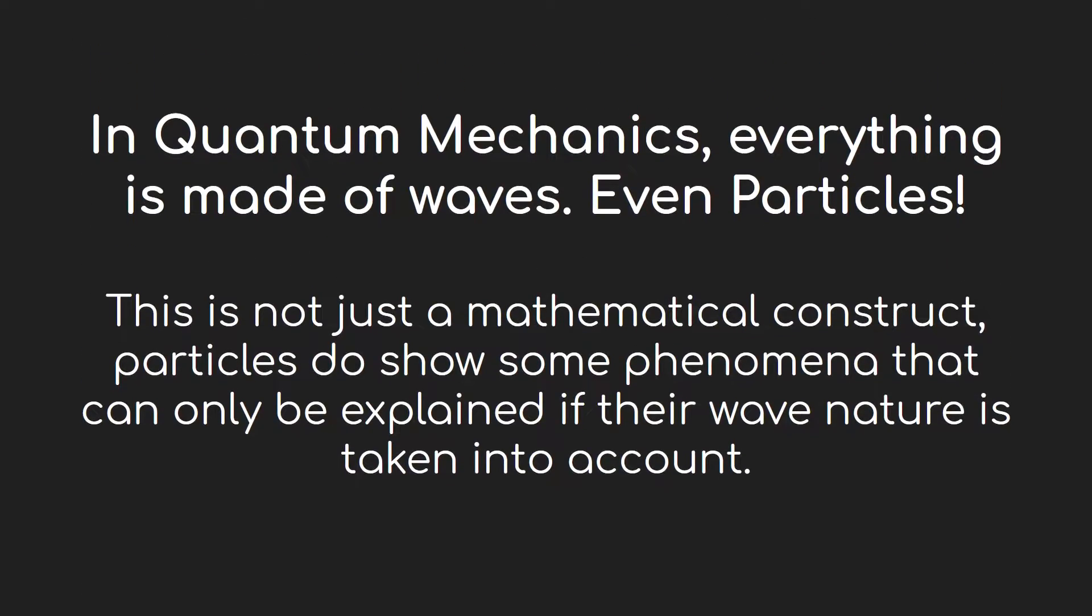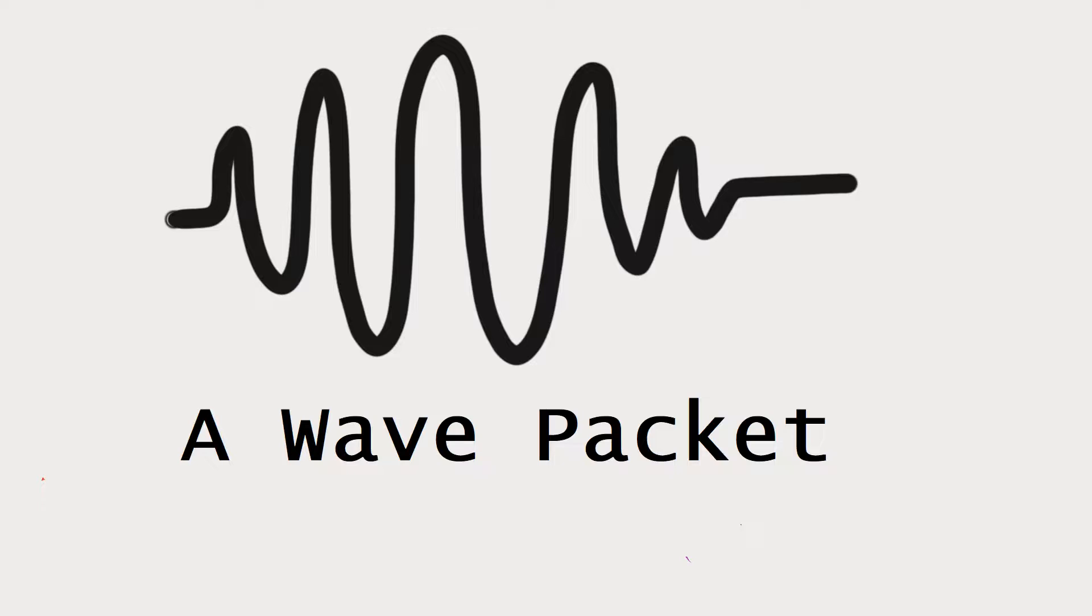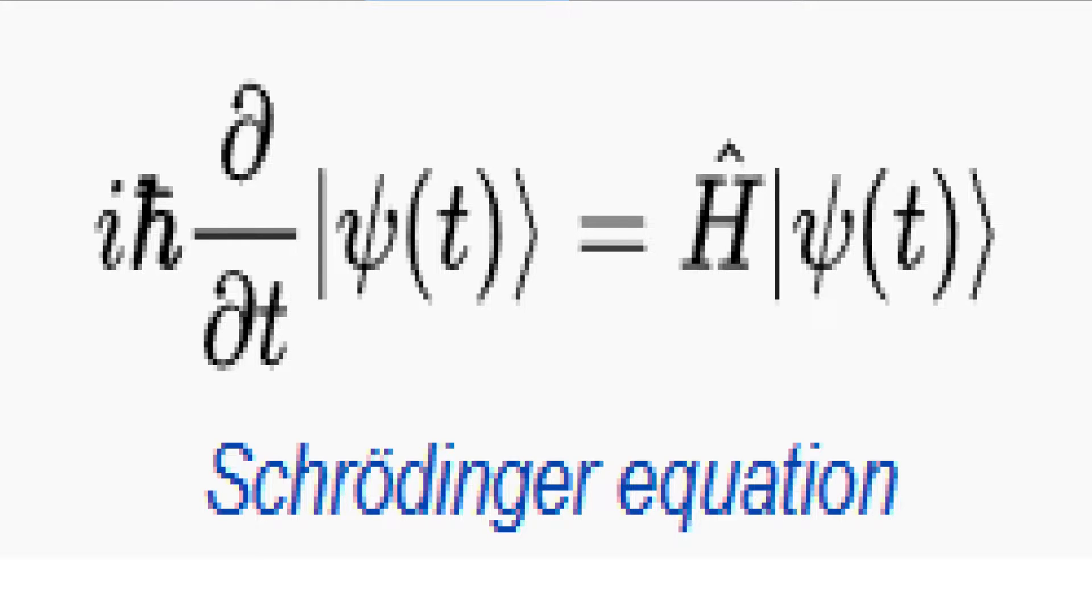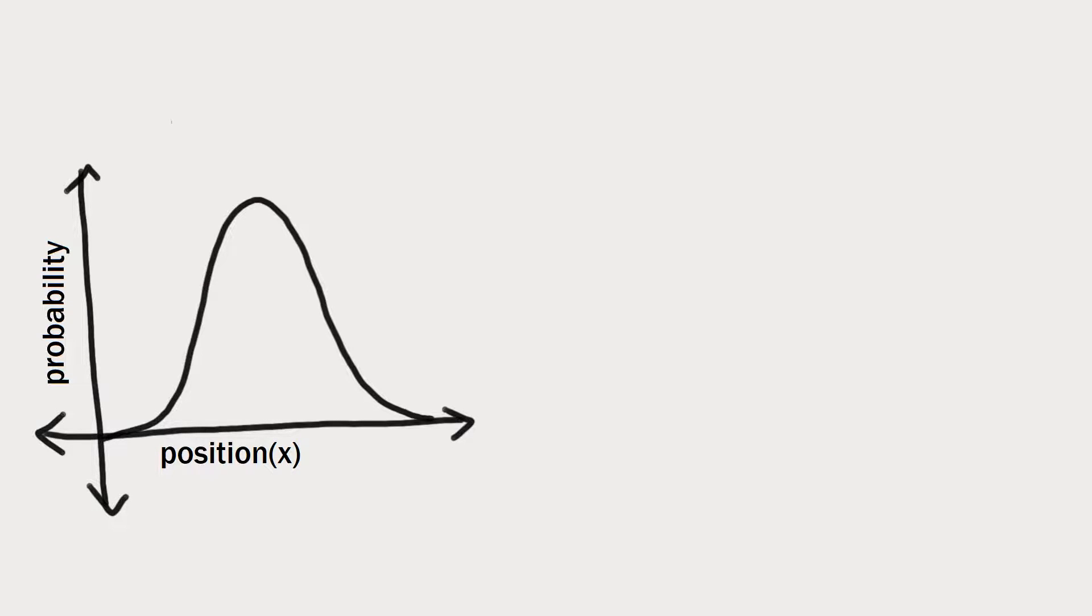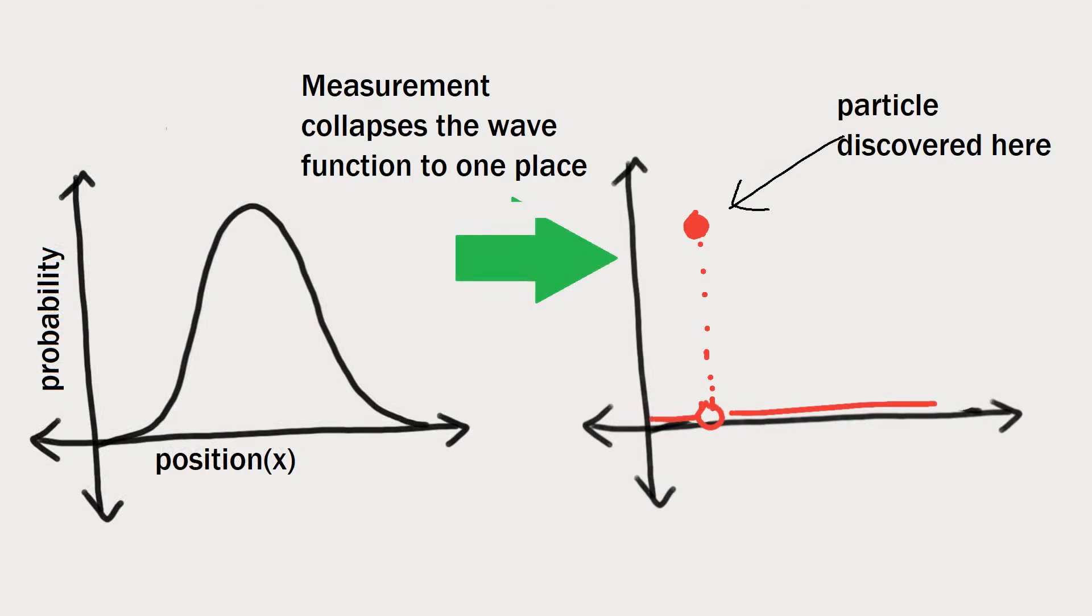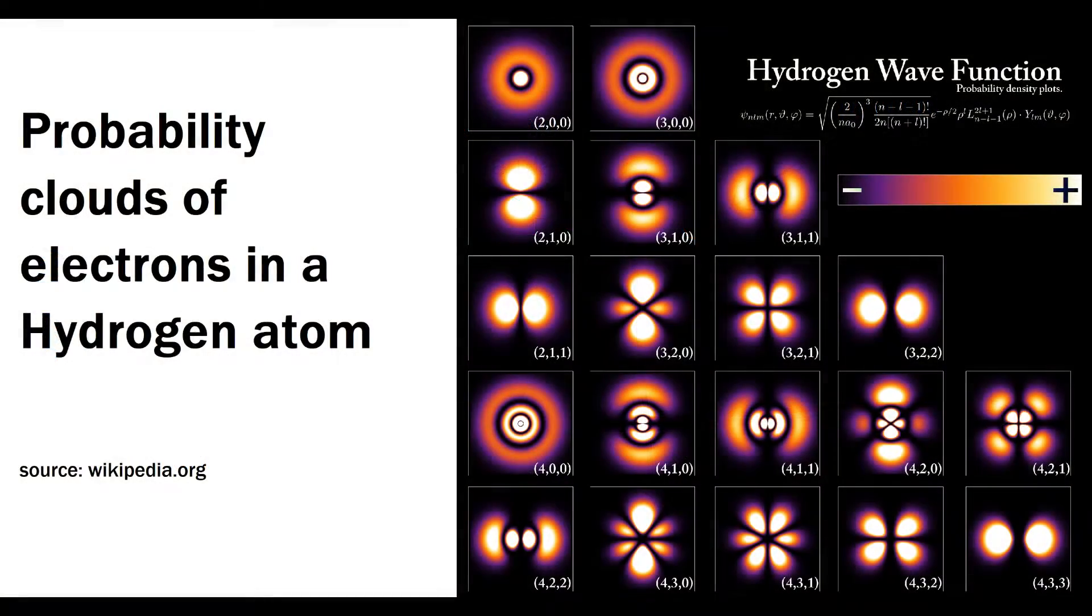In quantum mechanics, everything is described using equations of waves or wave packets obtained by solving Schrödinger's wave equation. Mathematical operations are performed on these waves to obtain information about the physical system. The waves themselves represent the probability or the probability density to be more precise of the concerned particle being located at a particular point if an attempt to measure its position is made. However, before the measurement, its location is uncertain and there is no way to predict its exact position no matter what method is used. Only the probability can be known. This shows how uncertainty is embedded into the very heart of this theory.